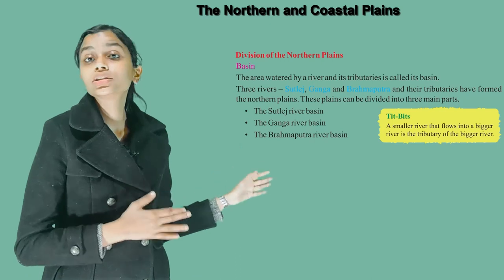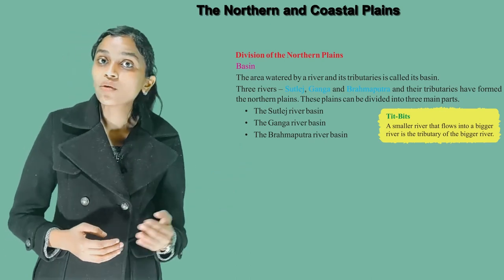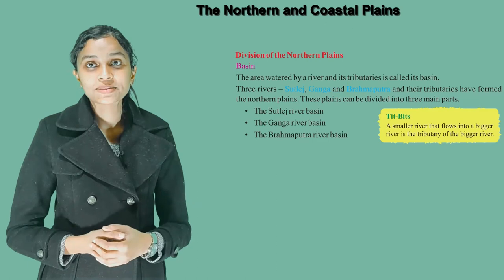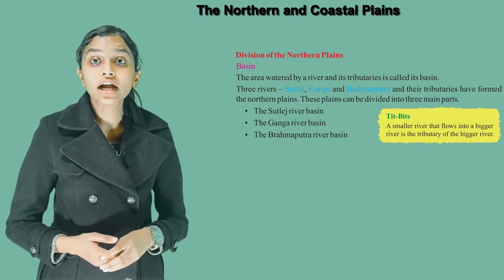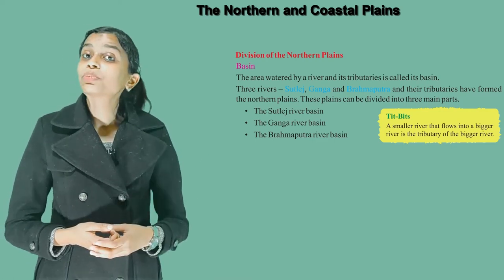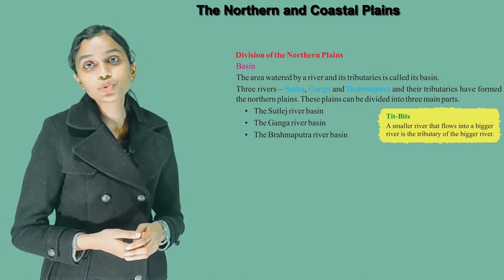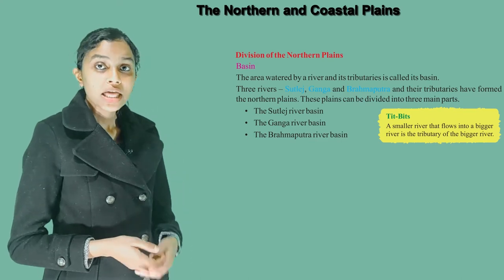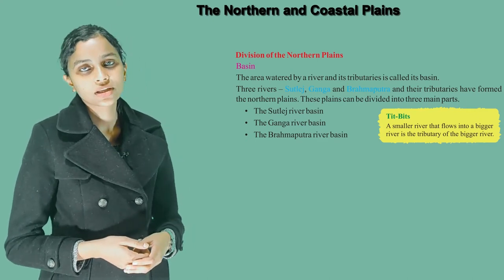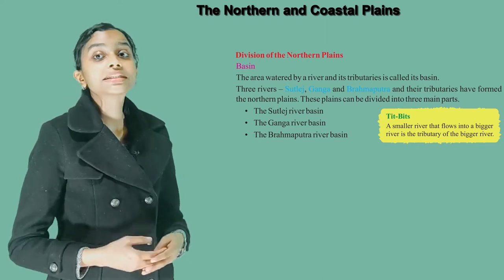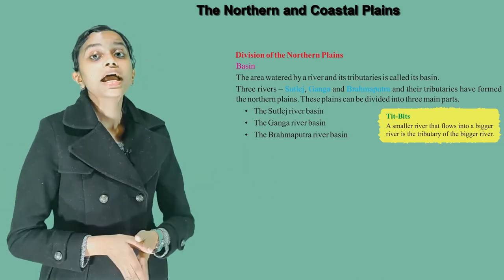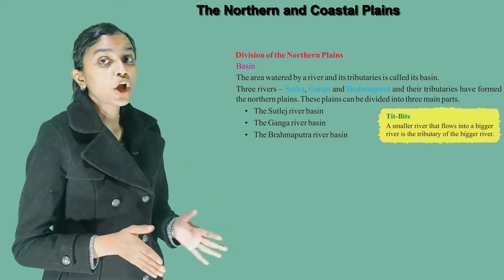Divisions of the Northern Plains. The area watered by a river and its tributaries is called its basin. Three rivers — Satloj, Ganga and Brahmaputra — and their tributaries have formed the Northern Plains. These plains can be divided into three main parts: the Satloj river basin, the Ganga river basin, and the Brahmaputra river basin. A smaller river that flows into a bigger river is called the tributary of the bigger river.